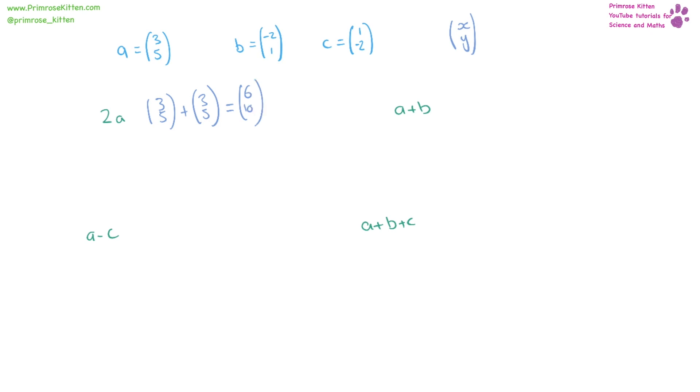a plus b, we have (3, 5) plus b, (-2, 1). 3 minus 2 is 1, 5 plus 1 is 6.